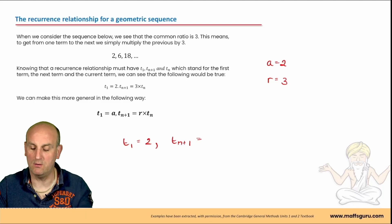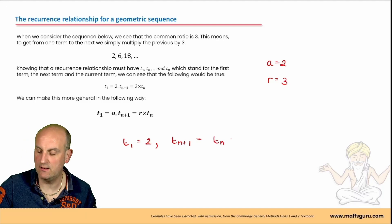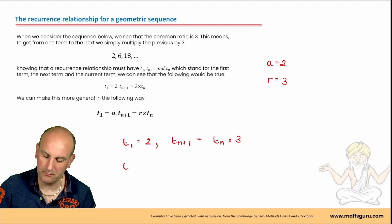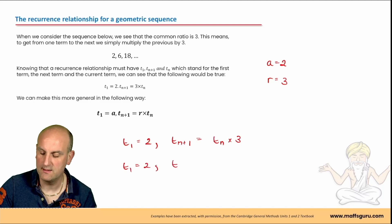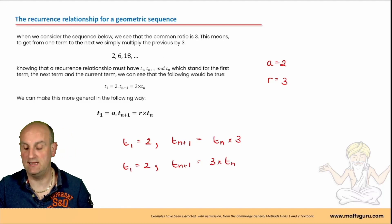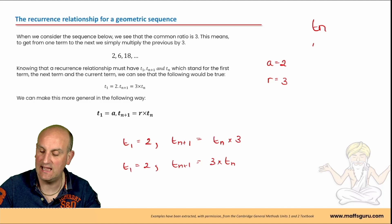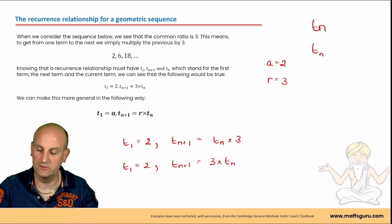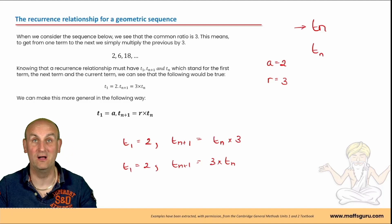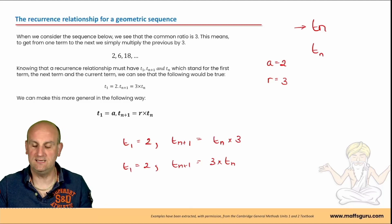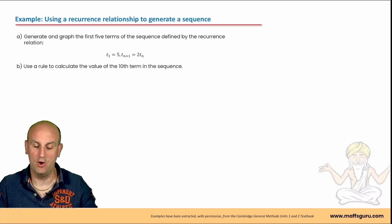We can write t(n+1) = t(n) × 3, or more formally: t1 = 2, t(n+1) = 3·t(n). Note that there is a big difference between 'tm' and 't(n)' — writing it incorrectly in an exam would cost you marks. Writing these things out precisely is really important; that is the standard format.